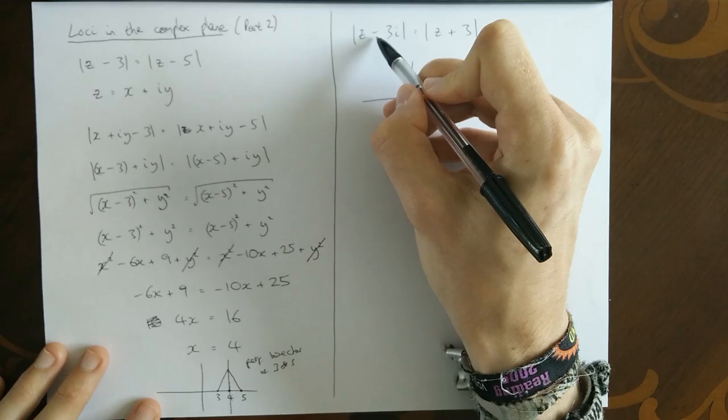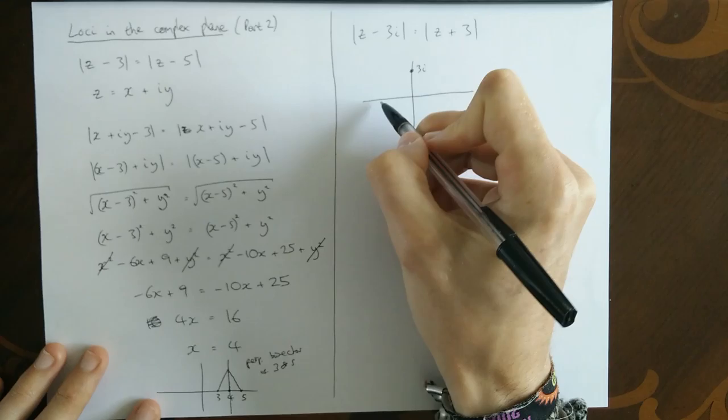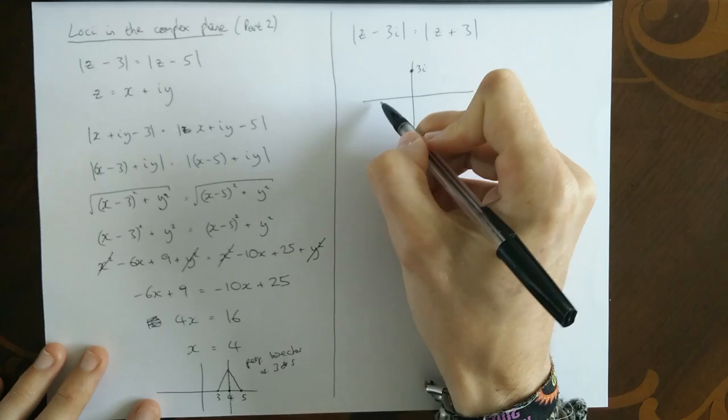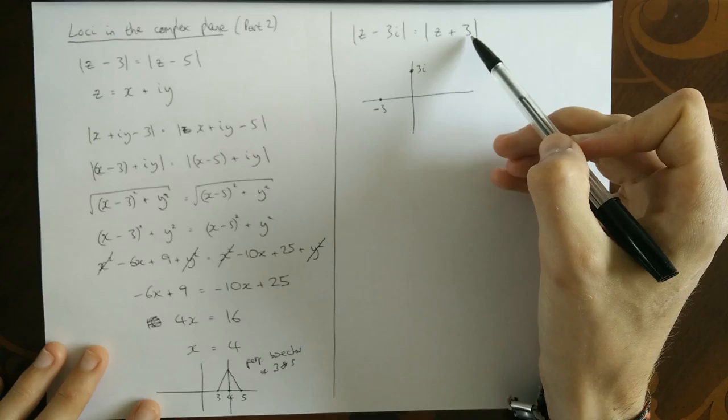So here, remember that it's the opposite of the sign. That's going to be a plus 3i we're now drawing, and this is going to be a minus 3 we're now drawing. And what I was saying is that it's the perpendicular bisector of those two points, the two numbers that we were looking at. So here it was 3 and 5.